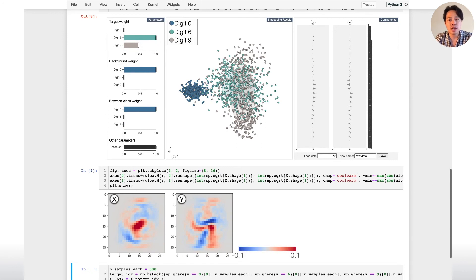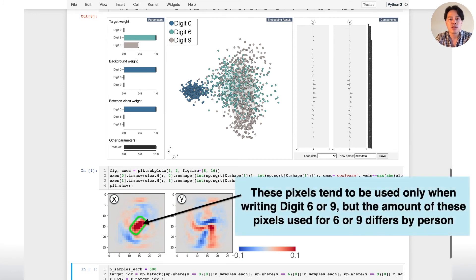We can see the x-axis information is clearly defined from the previous result. This result shows that the highlighted pixels tend to be used only when writing digit 6 or 9, but the amount of these pixels used for 6 or 9 differs by person.